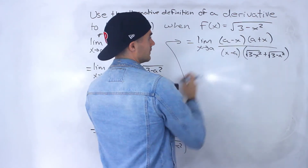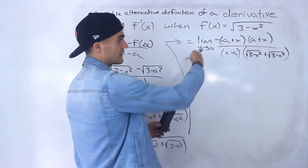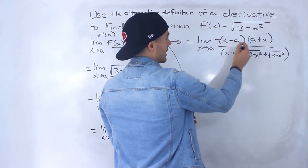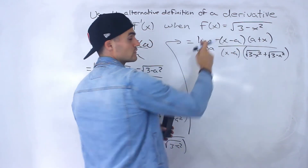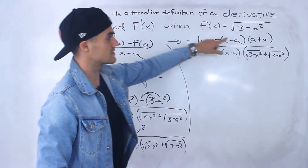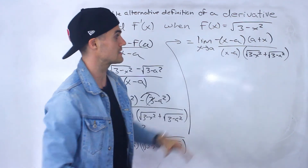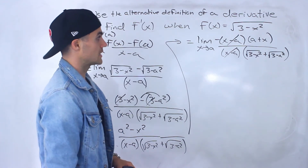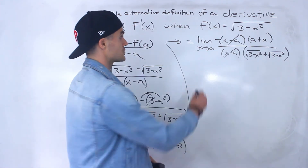What we can do is factor out a negative from the bracket containing a minus x. All the signs inside change, giving us negative times x minus a. Because these two terms are multiplying, we only factor the negative from one bracket. Now notice this x minus a matches the x minus a in the denominator — those cancel out.